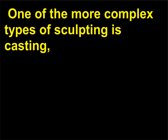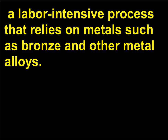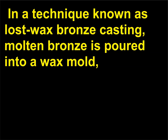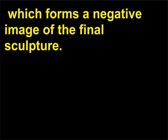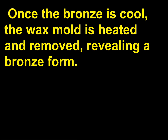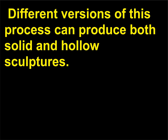One of the more complex types of sculpting is casting, a labor-intensive process that relies on metals such as bronze and other metal alloys. In a technique known as lost wax bronze casting, molten bronze is poured into a wax mold, which forms a negative image of the final sculpture. Once the bronze is cool, the wax mold is heated and removed, revealing a bronze form.